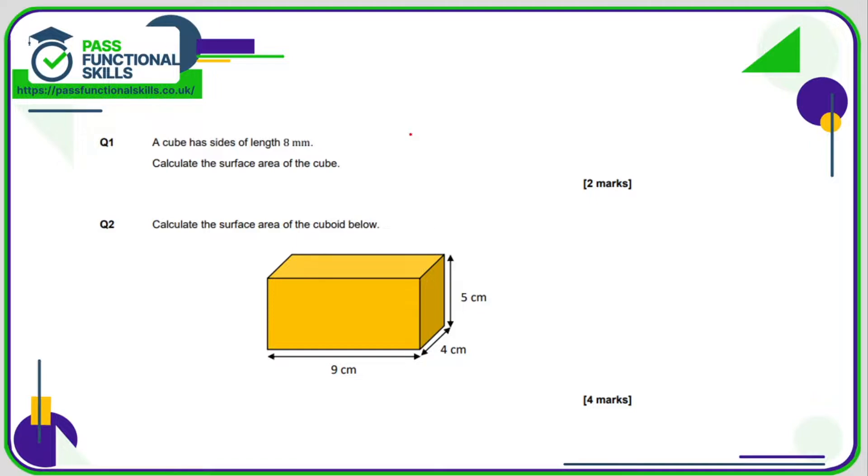calculate the surface area. Note it's the surface area, not the volume. Now a cube has got six faces, so each face is eight by eight, so each face has an area of 64 square millimeters. So if it's got six faces that's simply six lots of 64, so in total that's 384 millimeters squared.